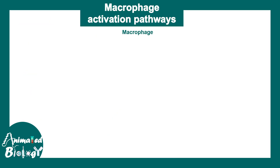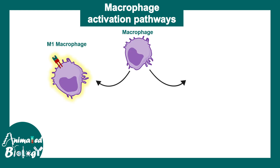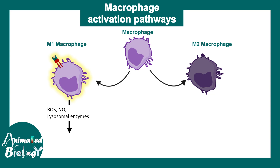Macrophages are of two types: M1 macrophages and M2 macrophages. M1 macrophages are highly associated with chronic inflammation. M1 macrophages do many things — one is the secretion of reactive oxygen species, reactive nitrogen species, and lysosomal enzymes, all of which can actually kill the pathogen.